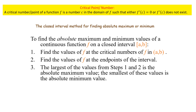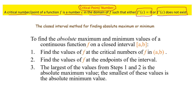Before calculating absolute maximum and absolute minimum of a function in a closed interval [a, b], we need to know what a critical point or critical number is. A critical number of a function f is a number c in the domain of f such that either f'(c) = 0 or the derivative of f at c does not exist.